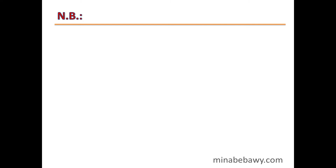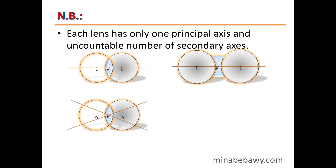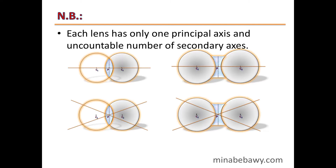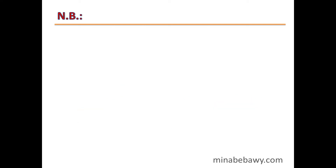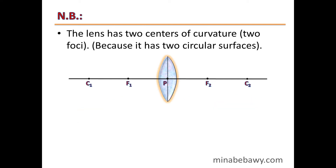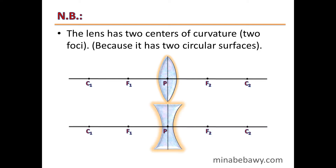Note the following: Each lens has only one principal axis and an uncountable number of secondary axes. The lens has two centers of curvature and two foci, because it has two circular surfaces.